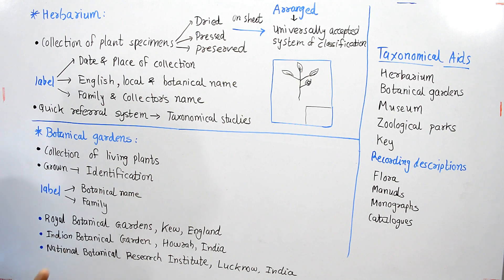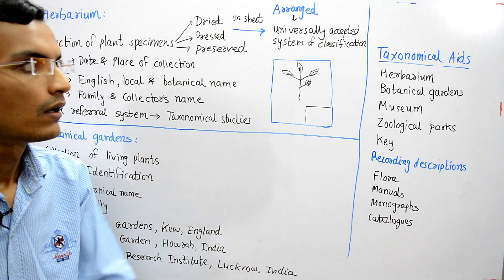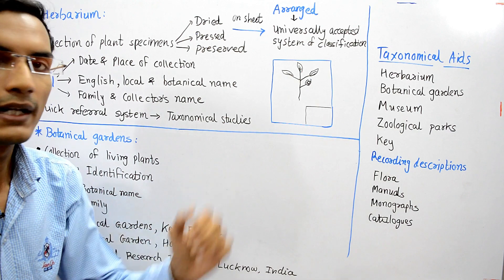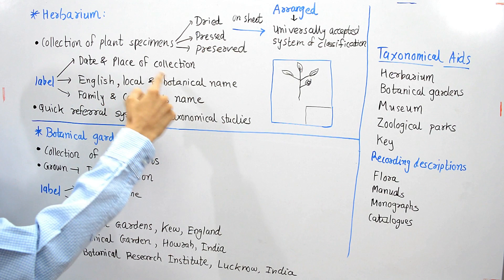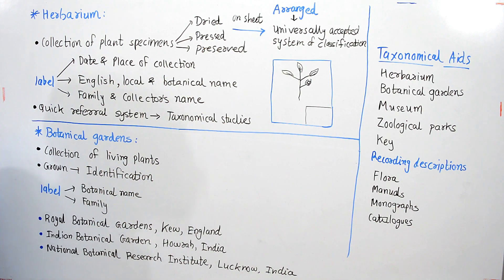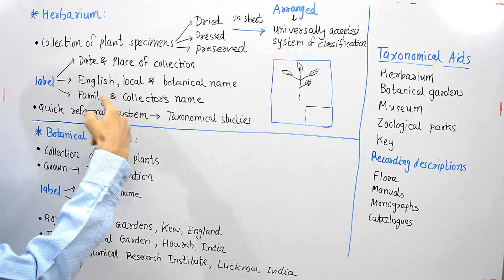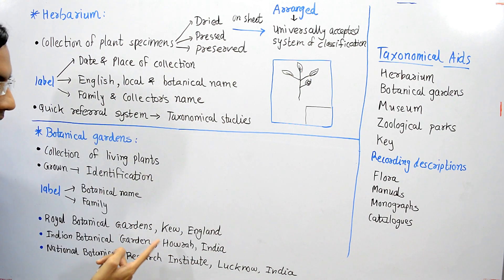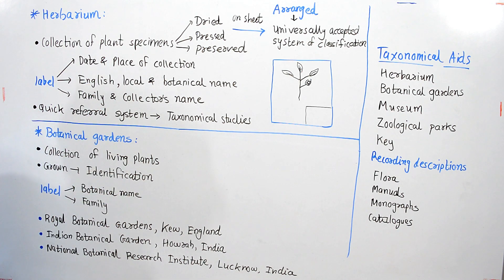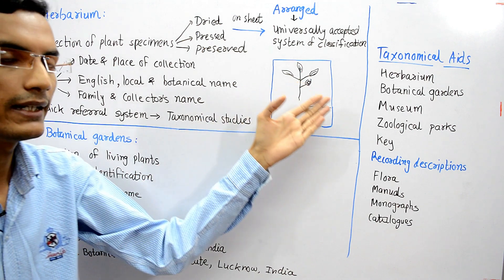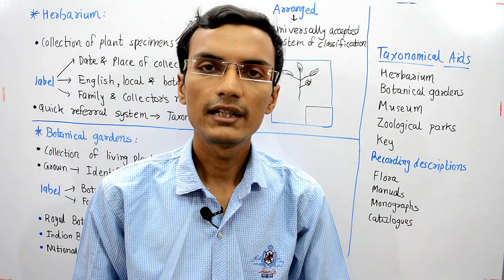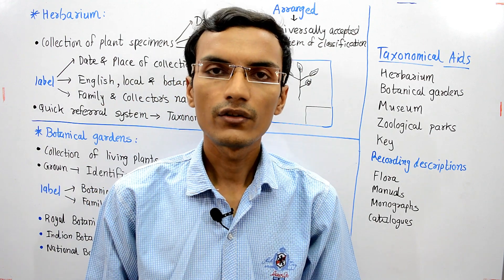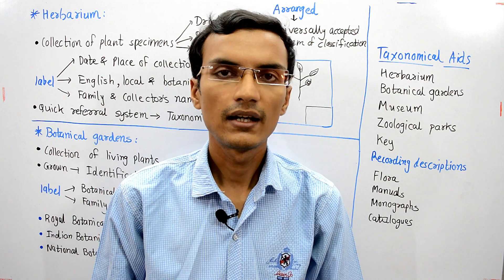This topic is important from a NEET point of view. Questions can be asked from herbarium — specifically, what information is found on the label — so you have to remember these points and also the names of these gardens. From the next videos, I'll be talking about the remaining taxonomical aids. I hope this video is helpful. If you watched till here, please hit the like button, share this video with your friends, subscribe to the channel, and thank you for watching.